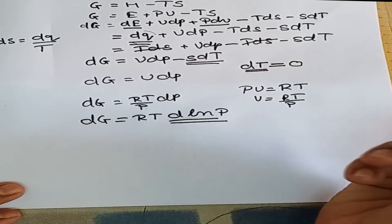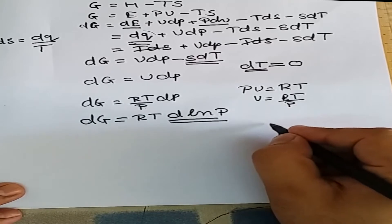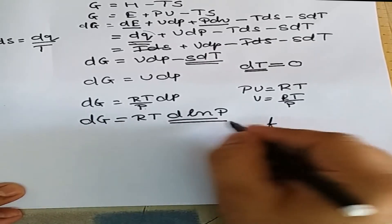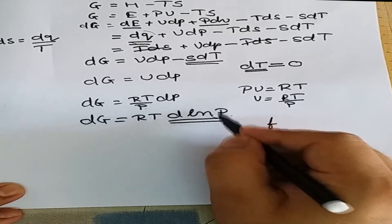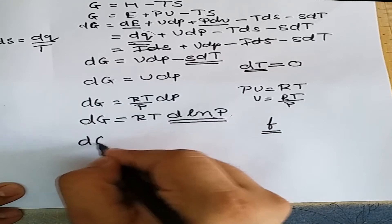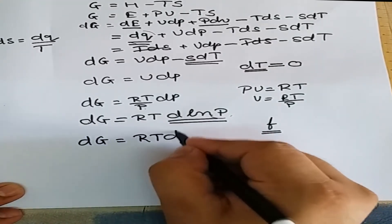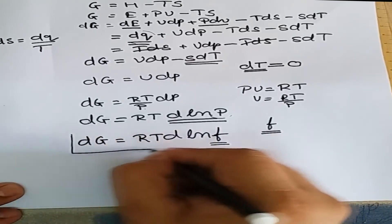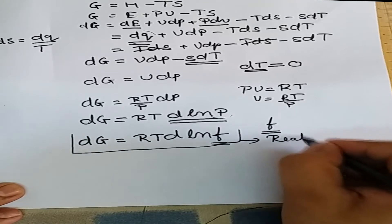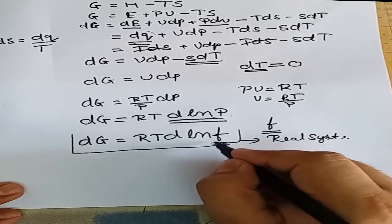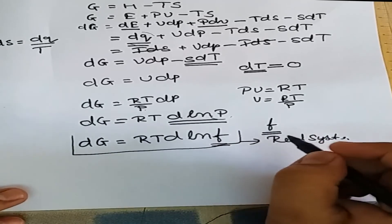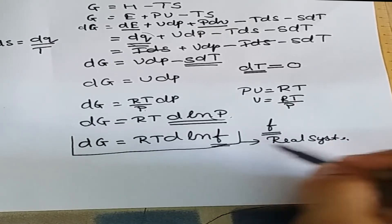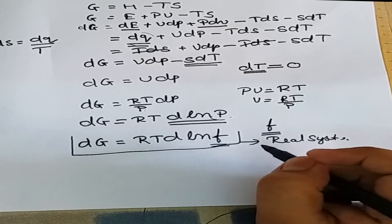For a real system, Lewis introduced a new term symbolized by the letter f, known as fugacity. For a real system, the pressure in the equation can be replaced by fugacity f, and hence we can write dG = RT d(ln f), where f is the fugacity of the system. This relation holds good for all real systems.